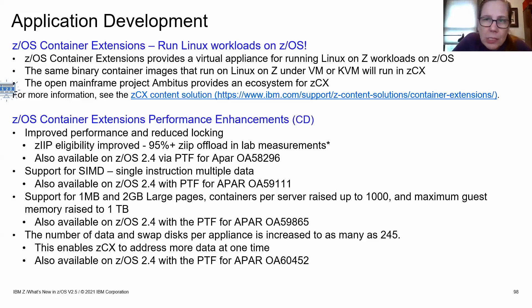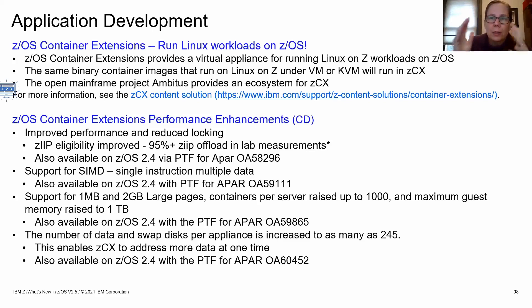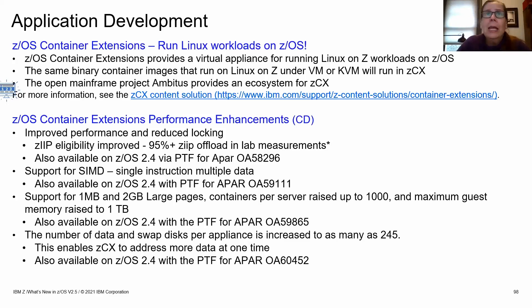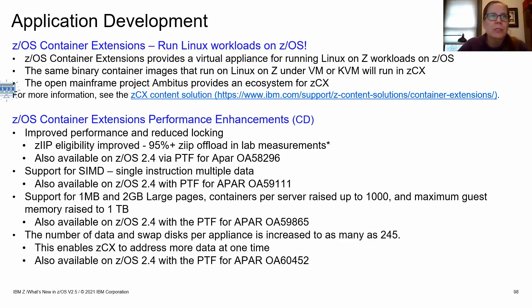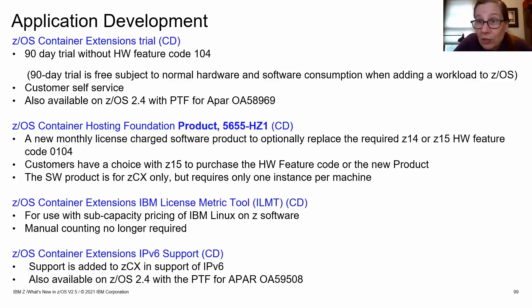For application development, there have been many ZCX enhancements. ZCX, incorporated into z/OS 2.4 as a base function, allows you to run a Linux-for-z Docker container inside a z/OS address space. Enhancements in 2.5 include offloading about 95% of ZCX work onto zIIPs, using Single Instruction Multiple Data (SIMD) for performance, support for large pages in both one-megabyte and two-gigabyte sizes, increased numbers of data and swap disks for the appliance, and a 90-day free trial option.